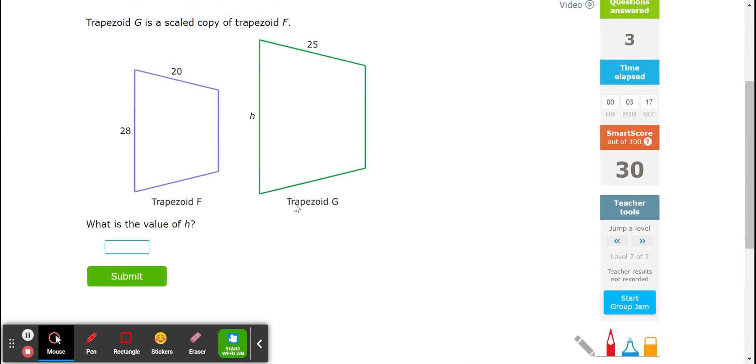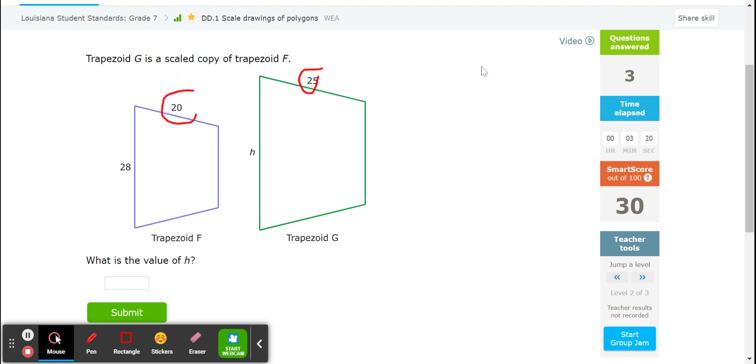Okay. Same style question. Find the scale factor. 25 over 20. That simplifies to 5 over 4.